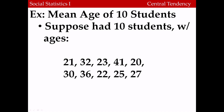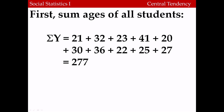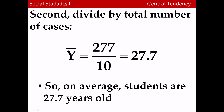Here's a simple example of the calculation for a mean. Suppose we had the ages of 10 students: 21, 32, 23, 41, 20, 30, 36, 22, 25, and 27. The first step is to add together all of the different ages. If we add up all 10 ages, we get a value of 277. Step 2 involves dividing that total by the total number of cases. Since we have 10 students, when we divide 277 by 10, we get 27.7. So on average, students are 27.7 years of age.